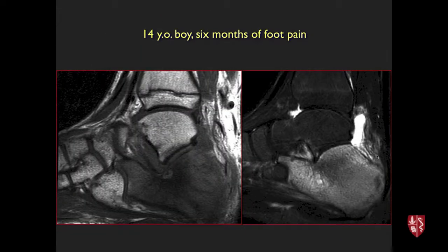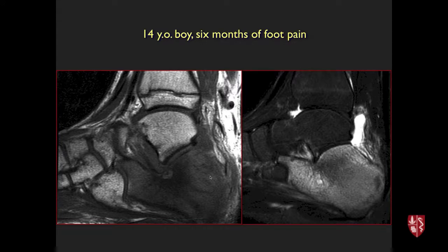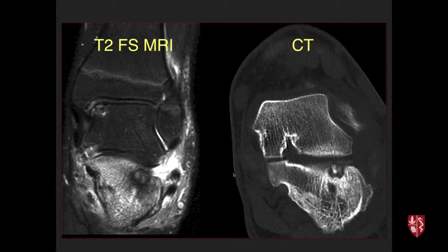A 14-year-old with six months of heel pain showed extensive calcaneal edema on T2 and low T1 signal throughout the calcaneus, with a small low-signal ovoid area near the posterior subtalar joint. CT demonstrated a lucency with central calcification and surrounding sclerosis — the classic nidus appearance of an osteoid osteoma. This entity can cause extensive reactive marrow edema mimicking stress fracture.